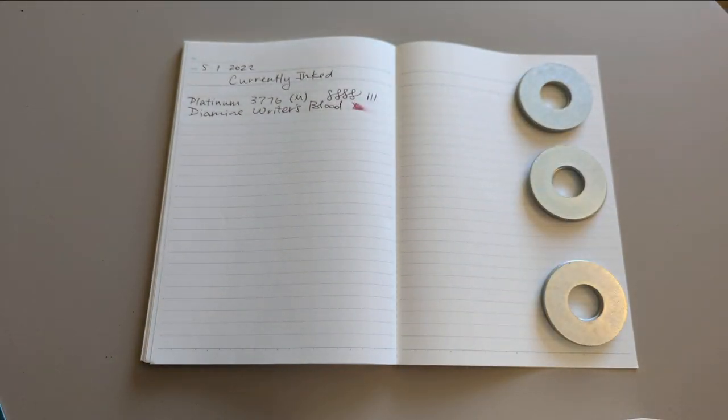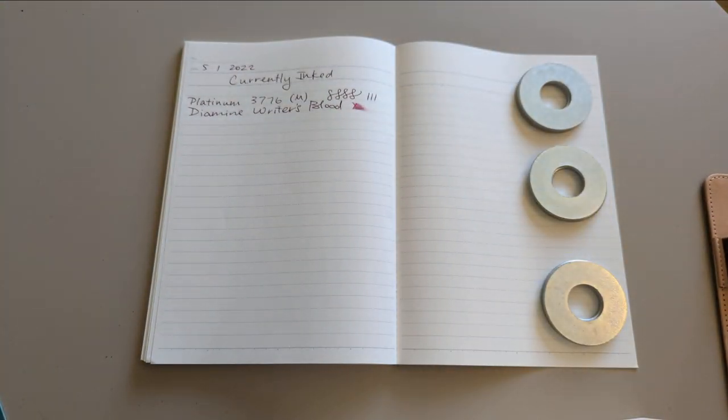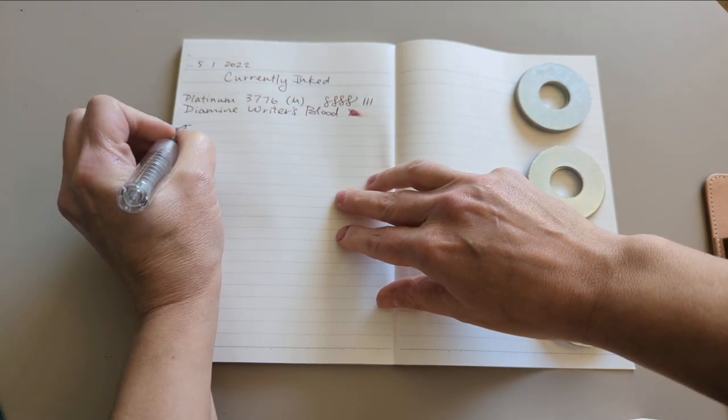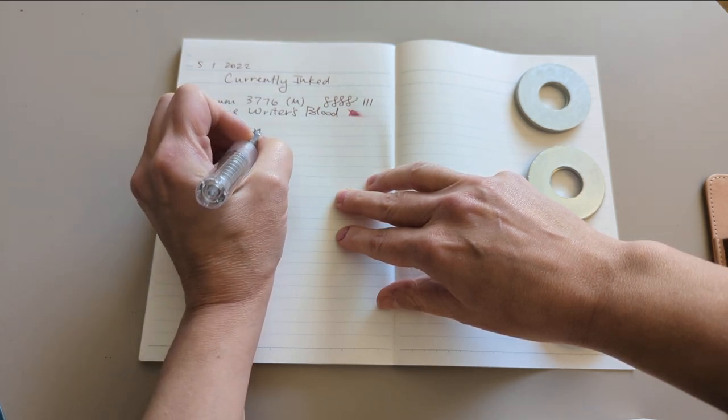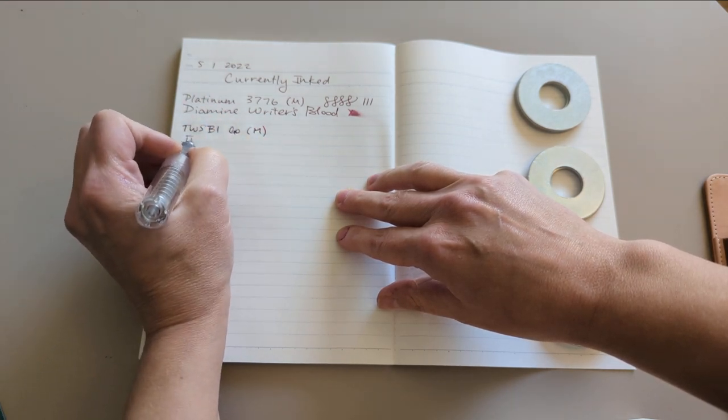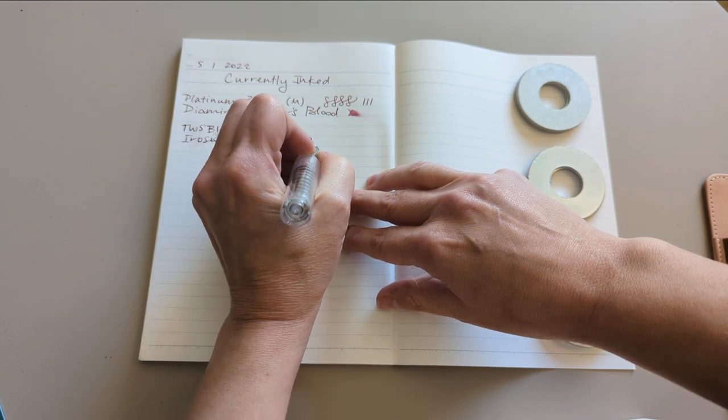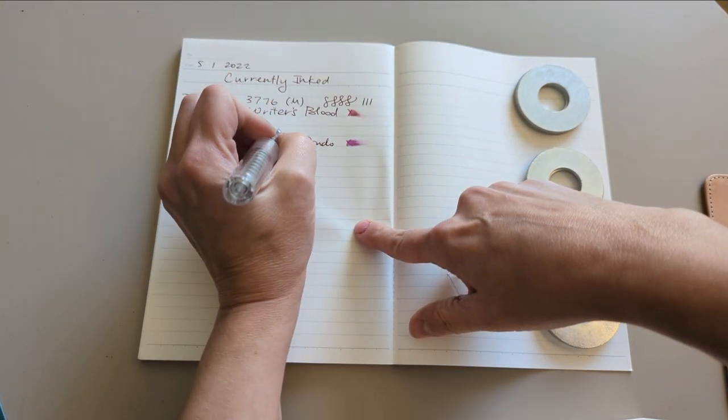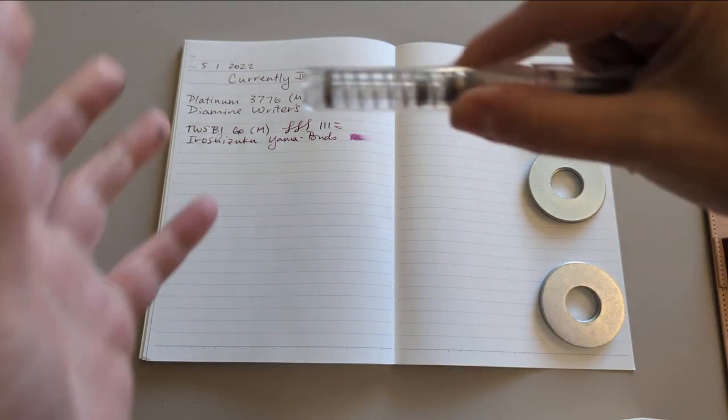Then do we have a theme? No, nope. From my little Galen Leather insert, this one has Yama Budo, which I don't like the way it looks on this paper. Hmm, funny. One of my more expensive inks and one of my cheapest pens.